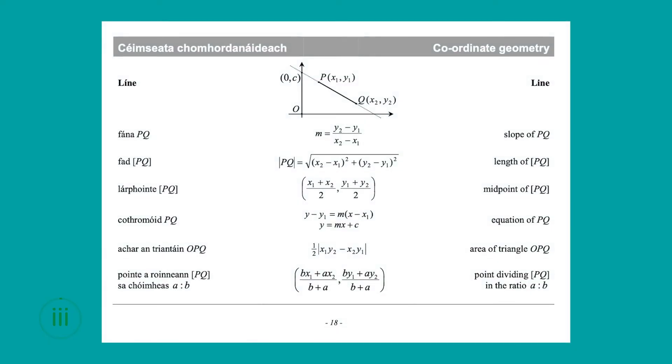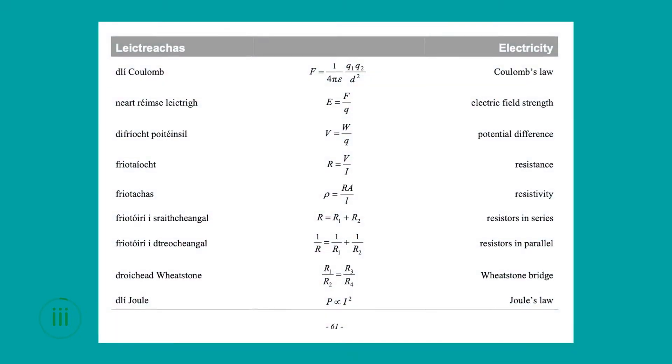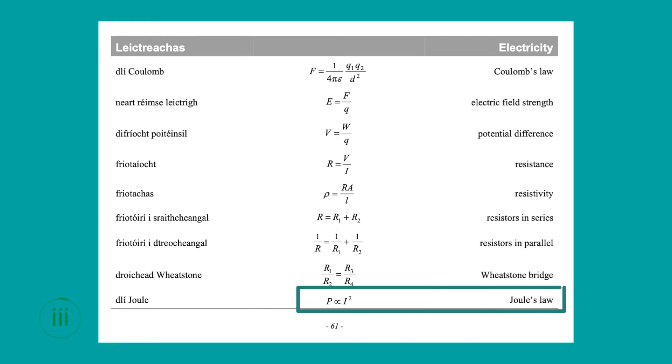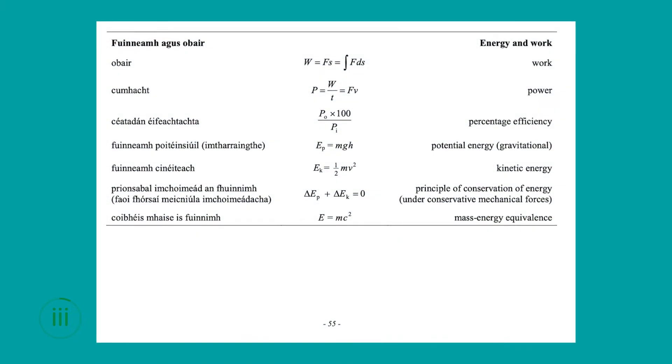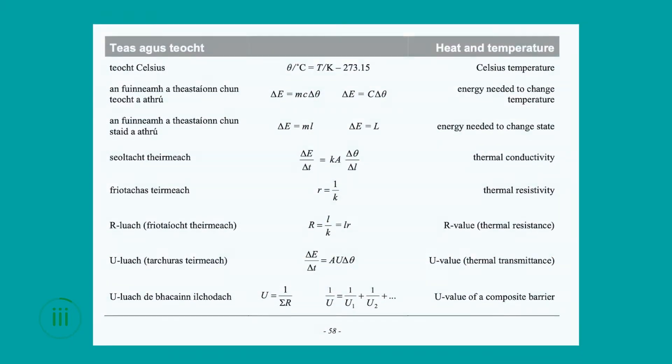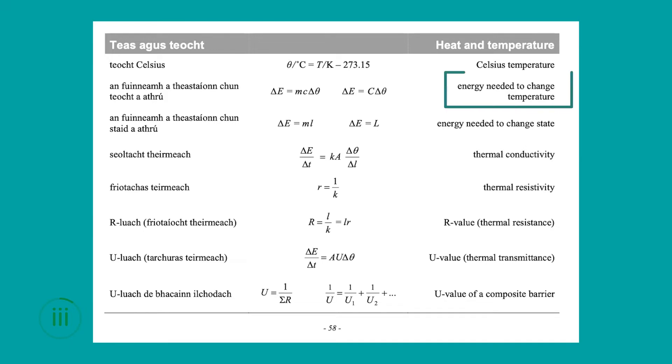Before we start part three, I just want to draw your attention to the formula in Table's book in particular, to a couple of formulas we will use throughout this part to help us answer the question. On page 18, we will look at the equation of the line formula, y equals mx plus c. On page 61, we will be looking at Joule's law, which shows that power is directly proportional to the current squared. Page 55, we will look at the expression for power, p is equal to work over time. And finally, page 58, where we will be looking at the energy needed to change temperature formula. In particular, change in energy is equal to the mass times the specific heat capacity of the substance times the change in temperature.